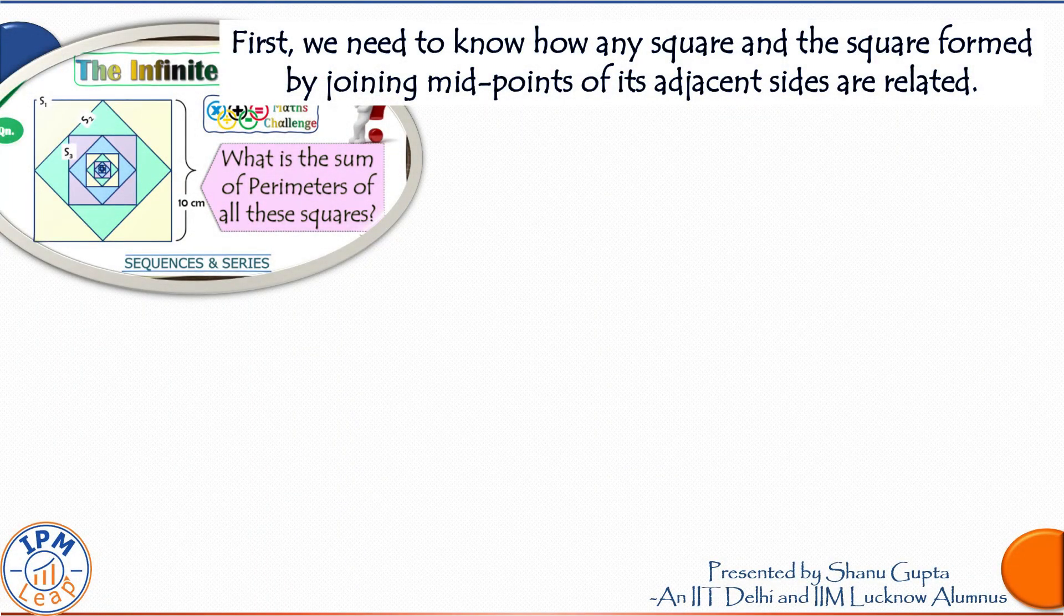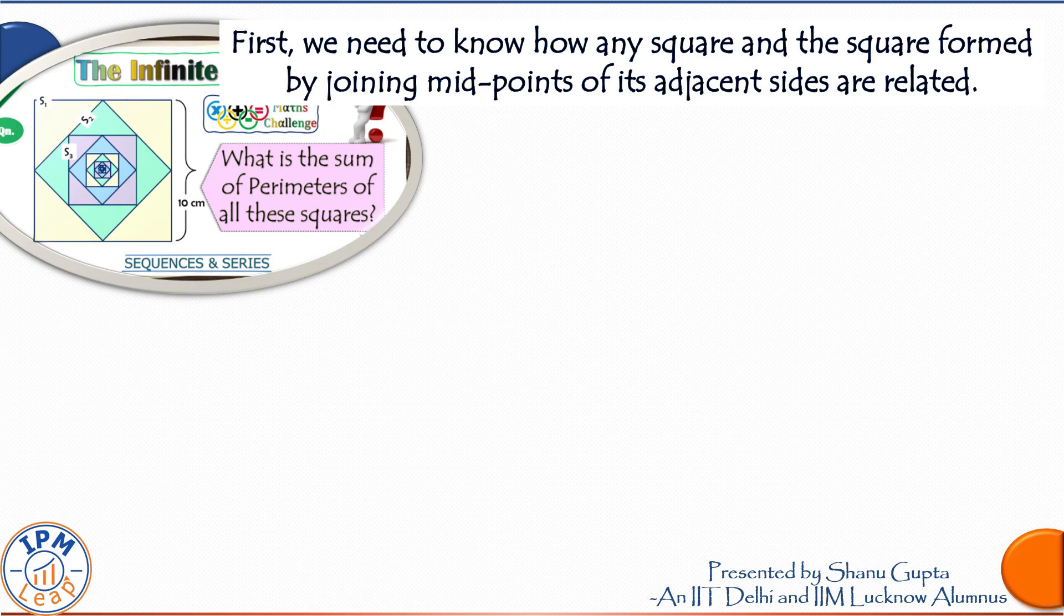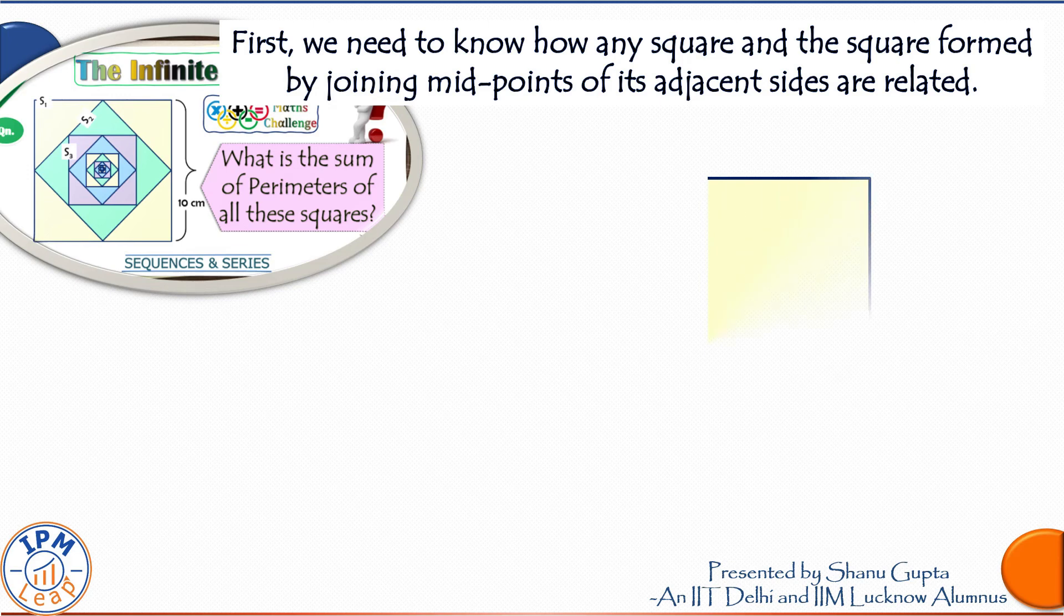So friends, first of all, don't worry about handling infinite squares. Because if you know the relation between any square and the square that is formed by joining its midpoints, half the question is already done. That is because any two consecutive squares will always bear the same relationship.